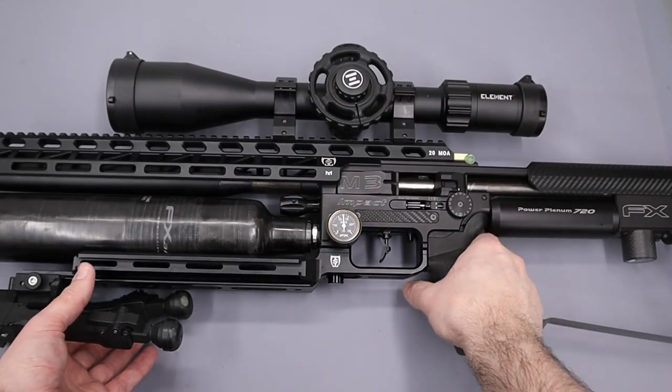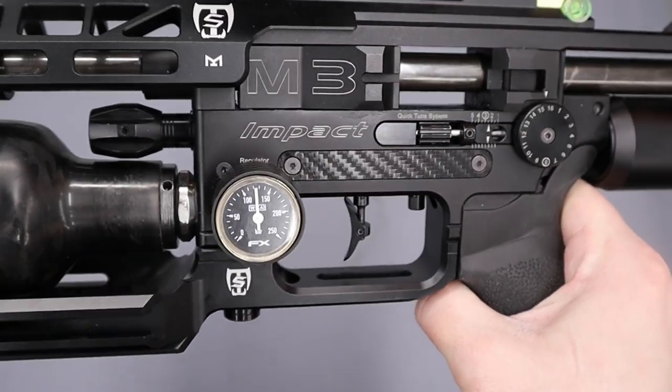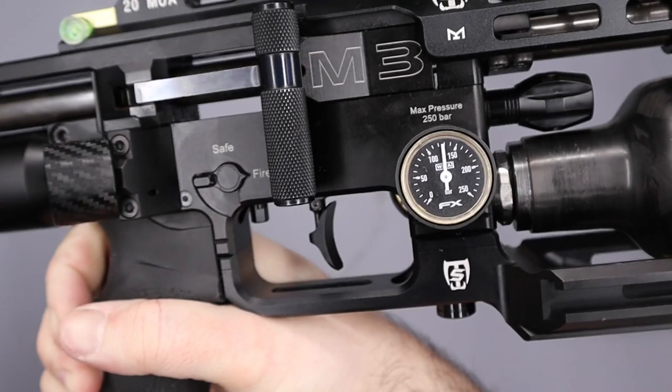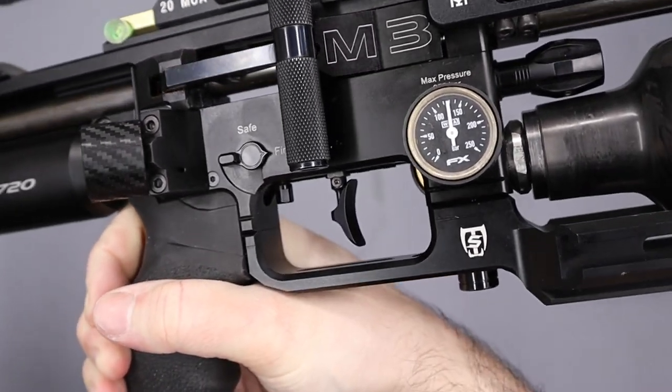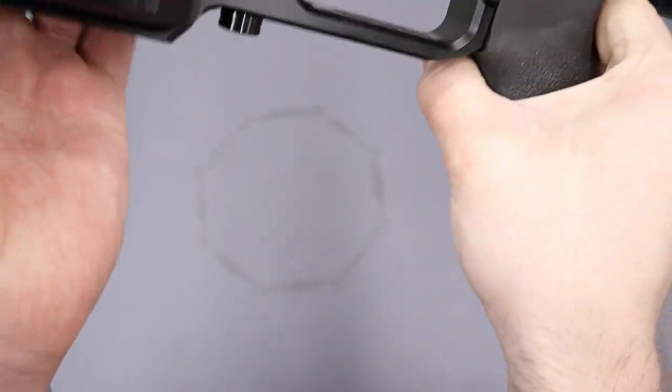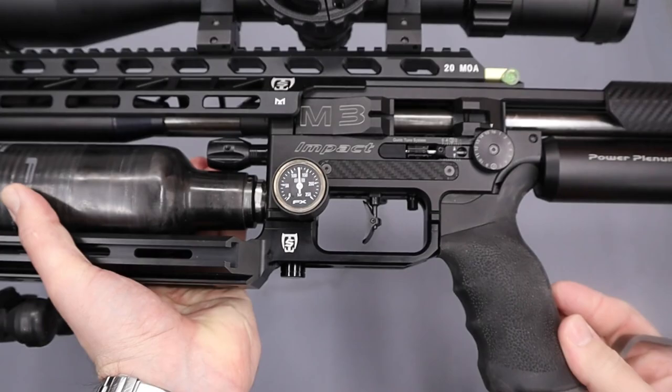Hi there guys, got a video here for you today on the FX M3 and what we're going to be doing in this one is making a new trigger blade for the rifle. The standard trigger blade that comes with the M3 is a fairly simple design, it's just a shaped shoe with a grub screw in the side to secure it to the pole. We're going to be making one with a slightly different design but you'll see what we do as we walk through the build.